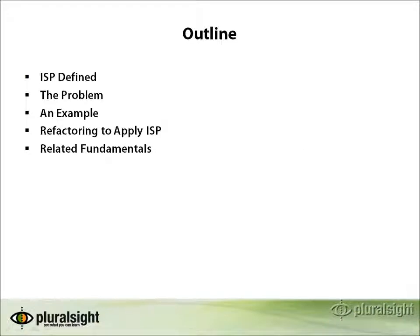In this module, we'll begin by defining the Interface Segregation Principle and see why it's a problem when it isn't followed. We'll look at examples of classes that have too many dependencies because ISP was not followed, and these classes were forced to depend on fat interfaces. We'll refactor to apply the principle and result in a better, more maintainable design, look at tips for when and how to apply ISP, and finally some related fundamentals and wrap-up.